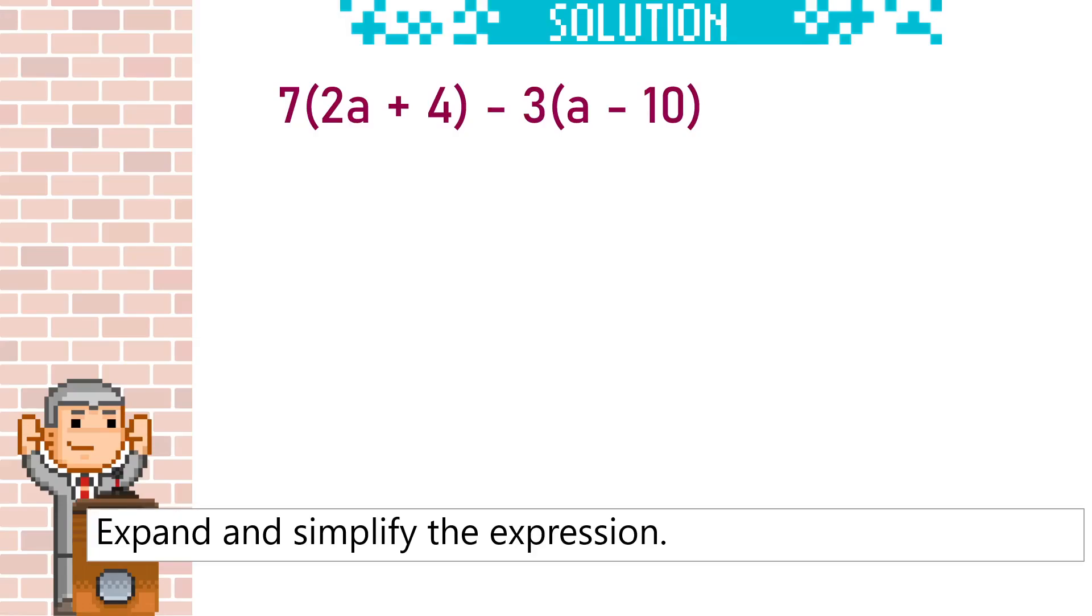Here we have a similar question but we need to be careful of the negatives. 7 times 2a is 14a, 7 times 4 is 28. Now be careful with this next one. That is a minus 3, not a 3.